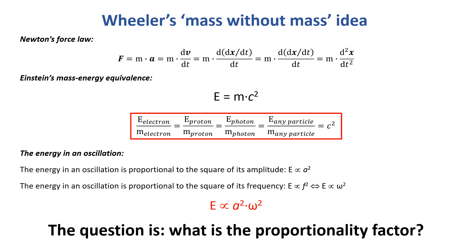That's not a mathematical constant like pi or Euler's number e. It's a physical constant with a physical dimension — 299,792,458 meters per second squared, exactly. I like to write Einstein's mass-energy equivalence in a red box: the ratio between the energy and the mass of any particle — an electron, a proton, a photon, any particle — is always the same: c squared. Why is that so?